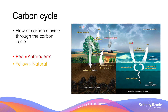Here we have a diagram of the flow of carbon dioxide through the carbon cycle. The numbers in red represent anthropogenic sources of carbon dioxide — sources which come from us — and in yellow is the natural source of CO2, given in billions of tonnes per year. There is 9 billion tonnes of CO2 being produced by anthropogenic sources per year, predominantly by the burning of fossil fuels, and not surprisingly we have seen an increase in global warming as a result.